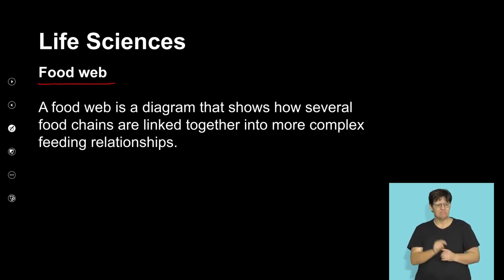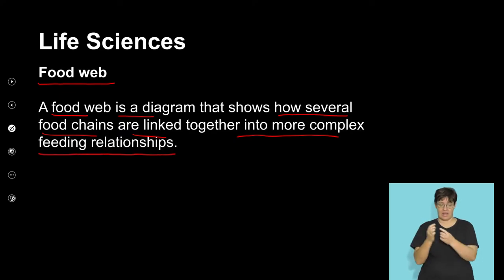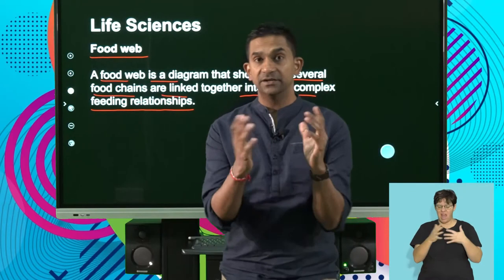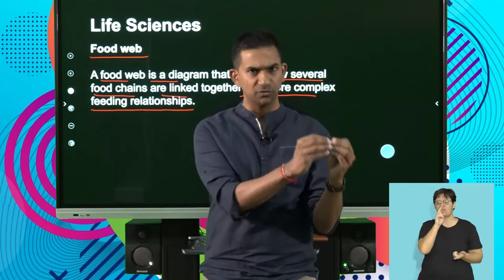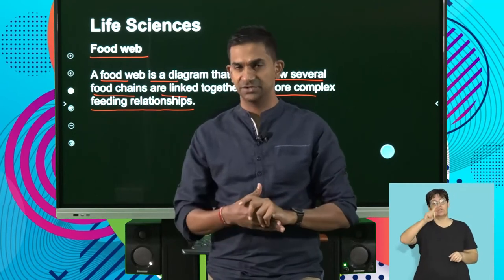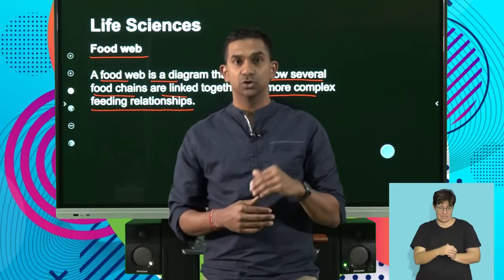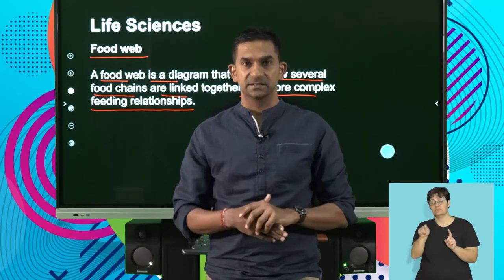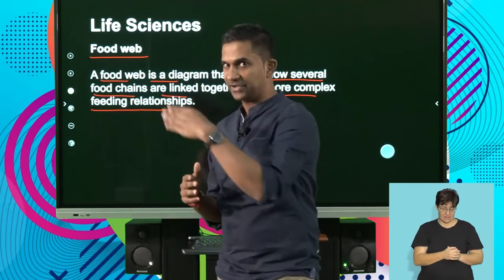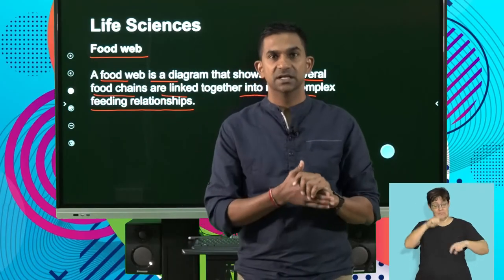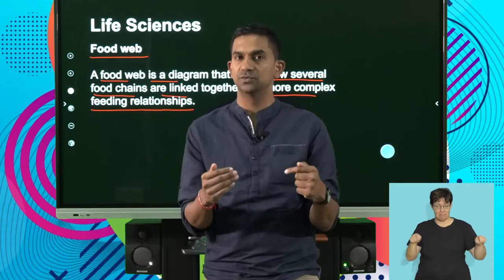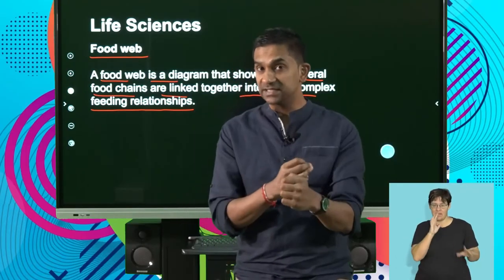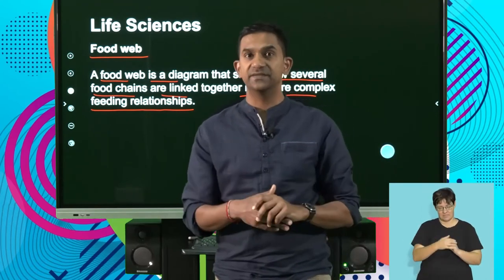A food web is a diagram that shows how several food chains are linked together in more complex feeding relationships. In any ecosystem, there are different levels of organization — tertiary consumers could feed on many different species, so it's not linked to one linear flow. The more diverse an ecosystem, the more interconnected food chains exist, where a tertiary consumer may consume many different types of secondary consumers, creating an interconnectedness we represent using food webs.